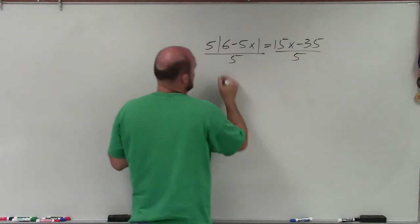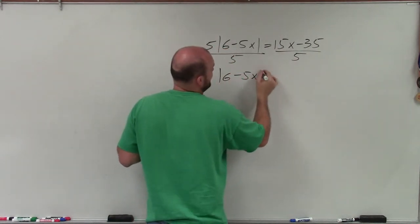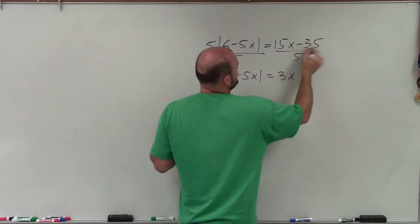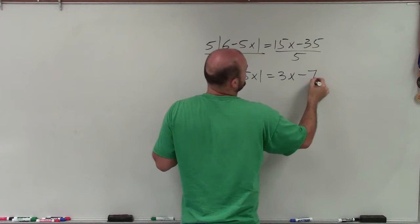So I'm going to divide by 5 on both sides. So I have absolute value of 6 minus 5x. 15x divided by 5 is 3x. Negative 35 divided by 5 is negative 7.